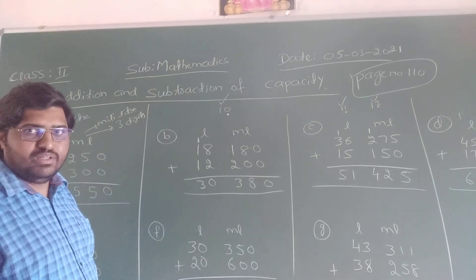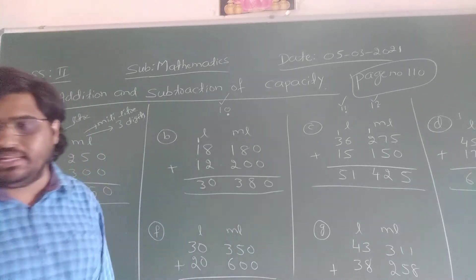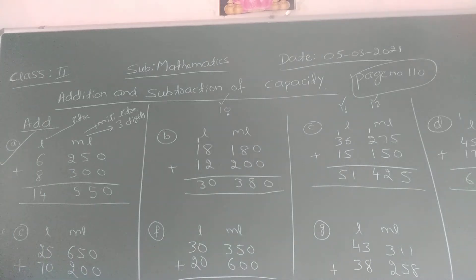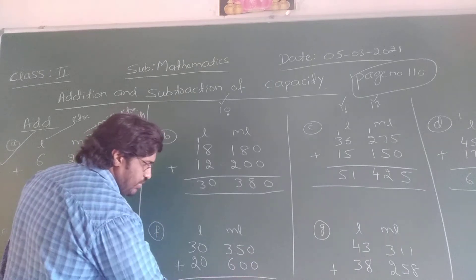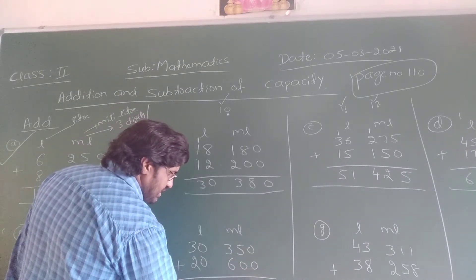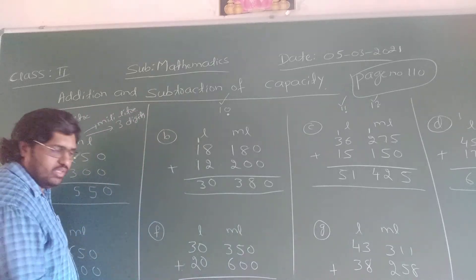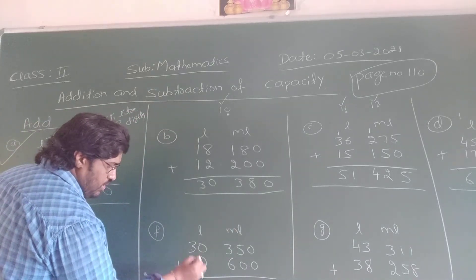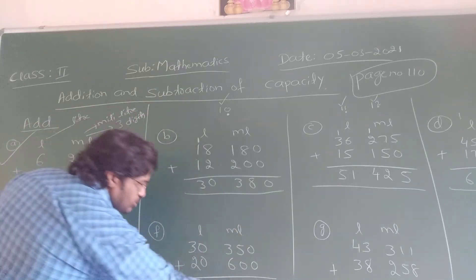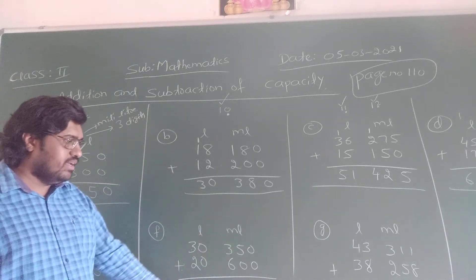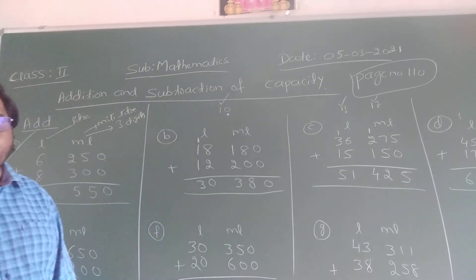Okay now question number F. 30 liter and 350 ml plus 20 liter and 600 ml. Your name is milliliter. Now we are going to add here. 0 plus 0 is 0. 5 plus 0 is 5. 3 plus 6 is 9. Now 0 plus 0 is 0. 3 plus 2 is 5. So the answer is here 50 liter 950 ml.